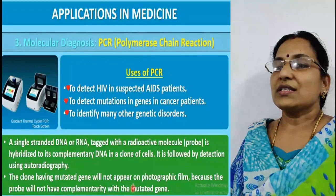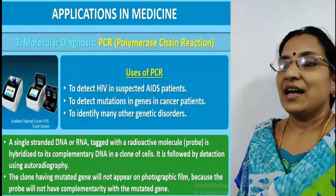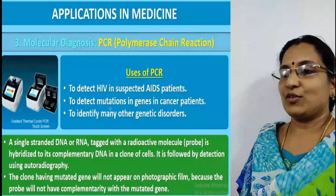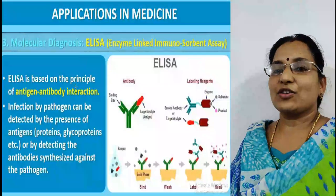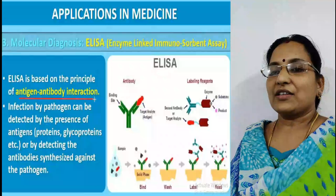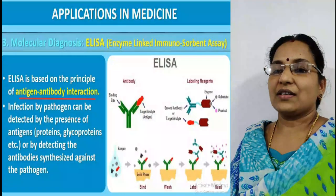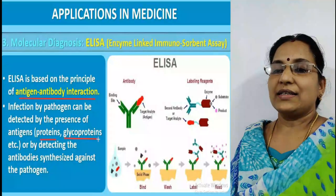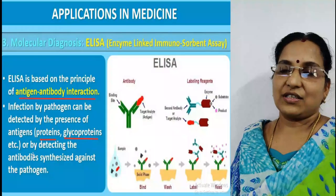The next technique is ELISA - Enzyme Linked Immunosorbent Assay. The principle of ELISA is based on antigen-antibody interaction. Infection by a pathogen can be detected by the presence of antigens such as proteins and glycoproteins, or by detecting the antibodies synthesized against the pathogens.